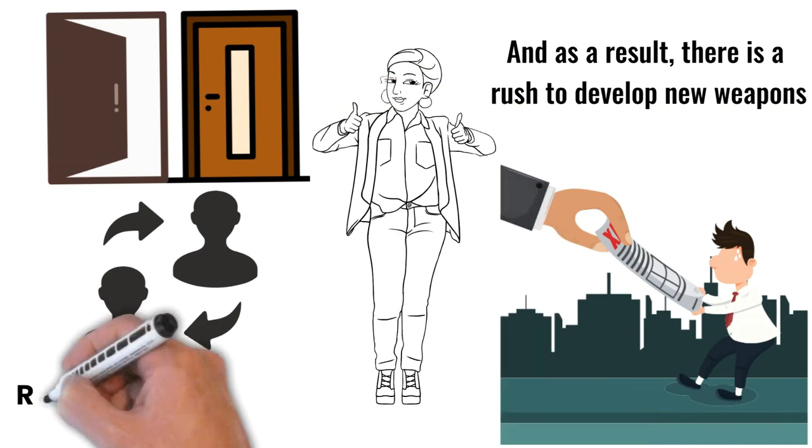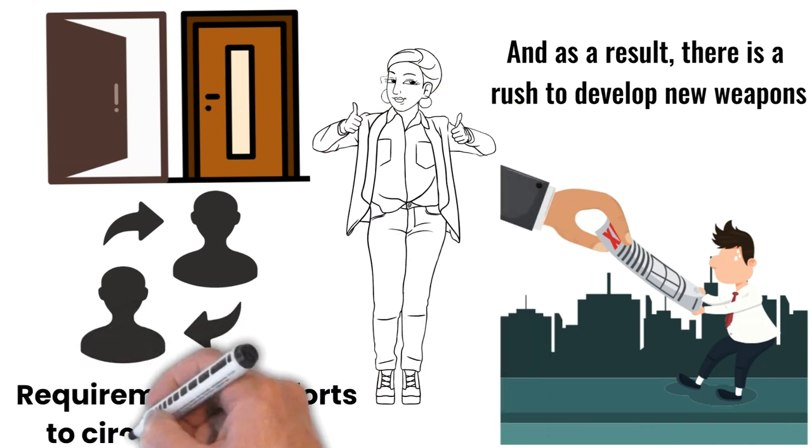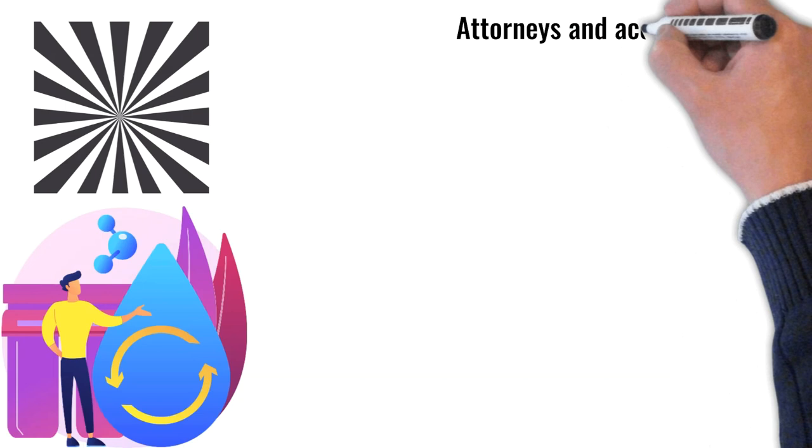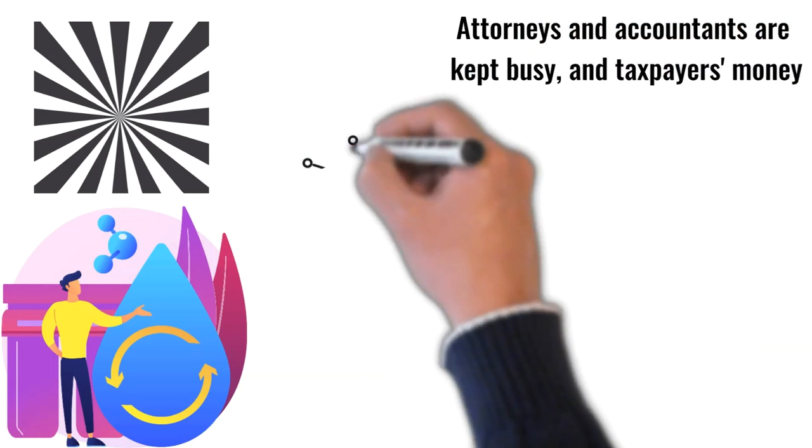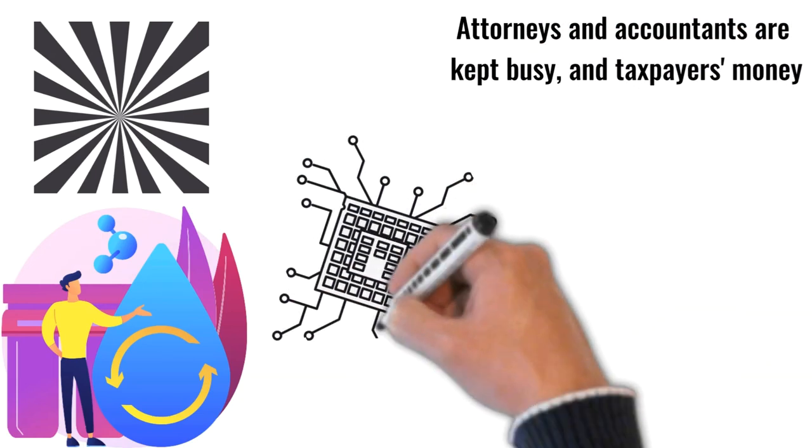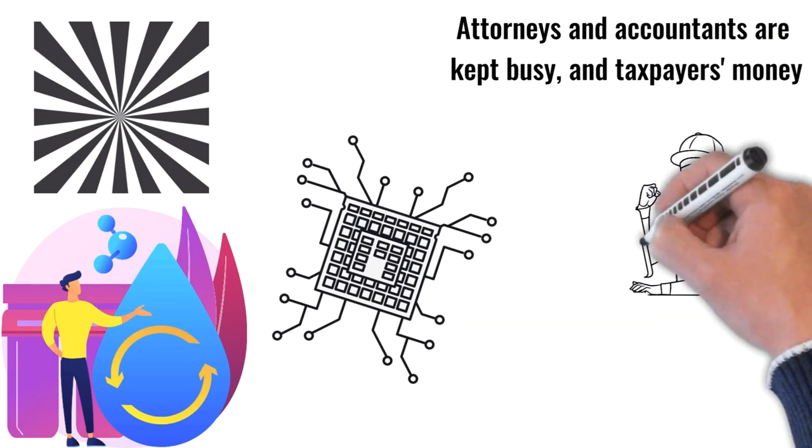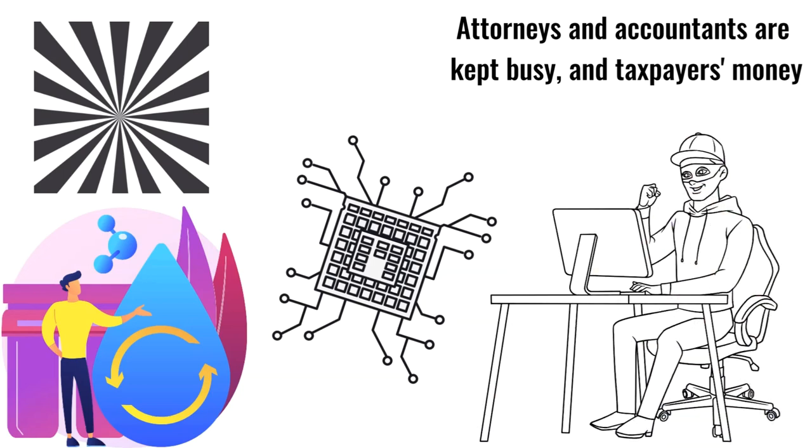We make no assumptions about the efficiency or fairness of the requirements or efforts to circumvent them. The whole system, on the other hand, is twisted and bizarre. In this way, attorneys and accountants are kept busy, and taxpayers' money is funneled into the coffers of legal technologists in a highly efficient manner.